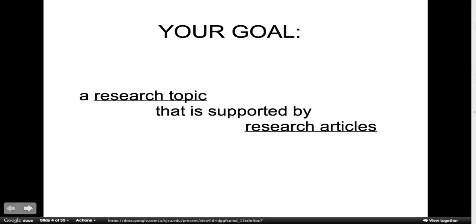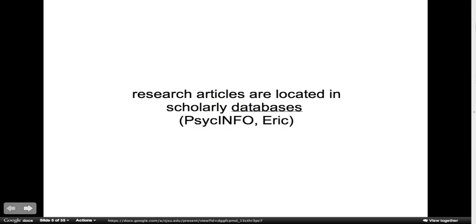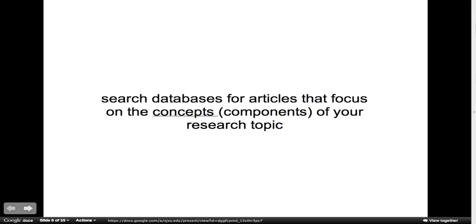Today I'm going to talk to you about developing a research topic and the steps to go into gathering resources in order to write a research paper. For most of the process, your goal is writing a research topic that is supported by research articles. Research articles are located in scholarly databases such as PsycInfo and ERIC. You'll search databases for articles that focus on the concepts of your research topic. These concepts are also components.